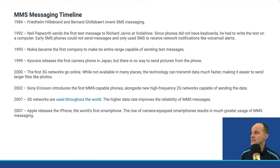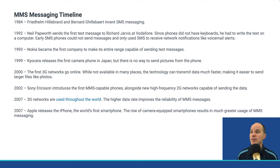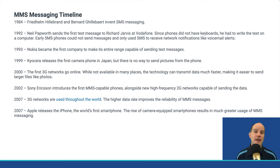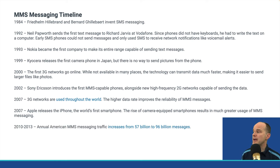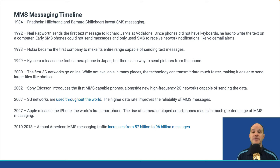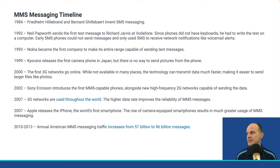Also in 2007, Apple releases the first iPhone — the world's first smartphone. The rise of camera-equipped smartphones results in a much greater use of MMS messaging, and Apple embraced this technology from day one. In 2010 to 2013, the annual American MMS messaging traffic increases from 57 billion to 96 billion messages and counting.